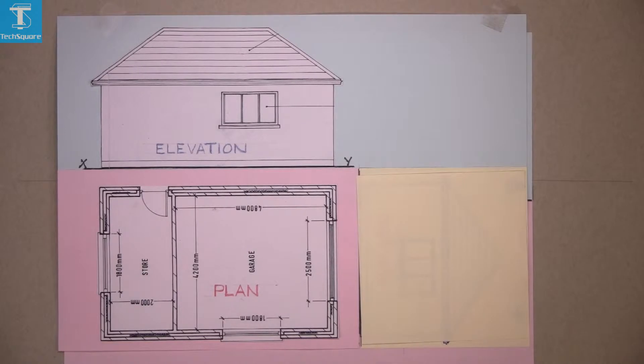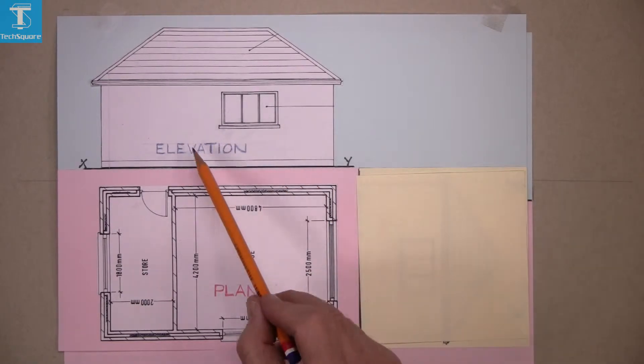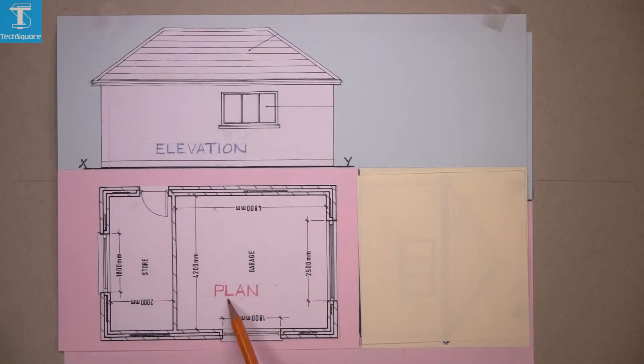Orthographic projection 2. In the blue section up here we have the elevation, and in the pink section below we have the plan, and the line here is called the XY line.